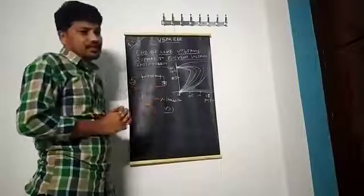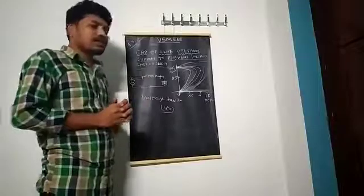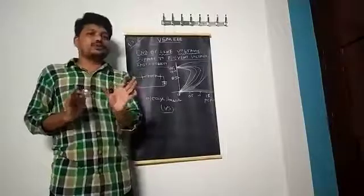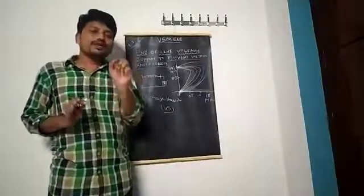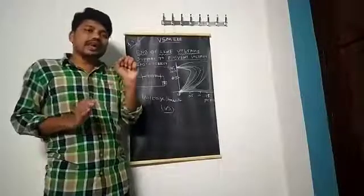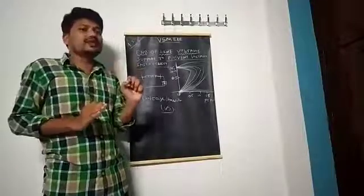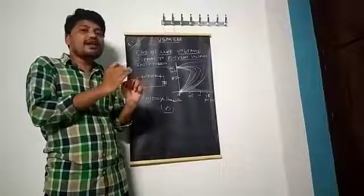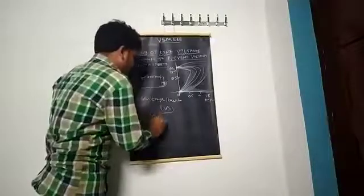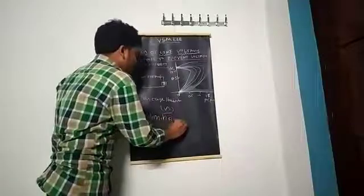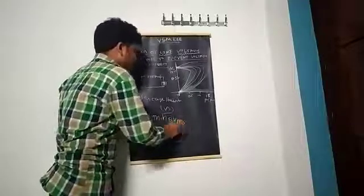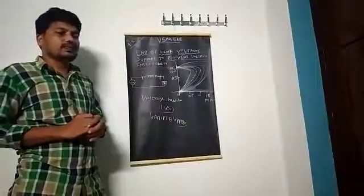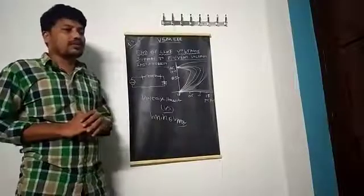That means the ability of the system to maintain the voltages within acceptable limits — V minimum and V maximum — under both normal and abnormal conditions.